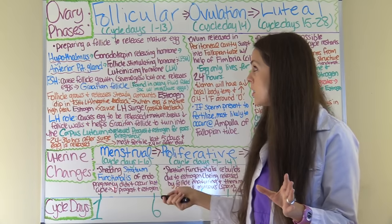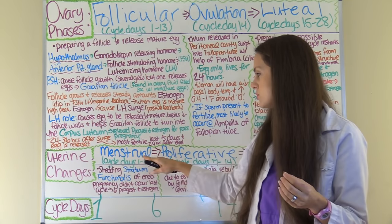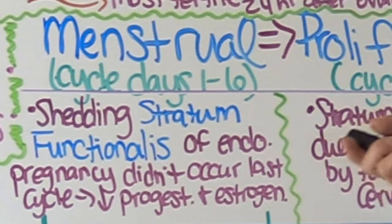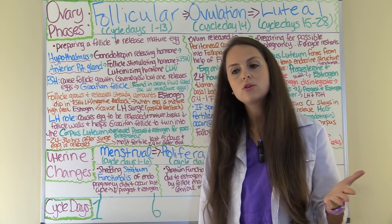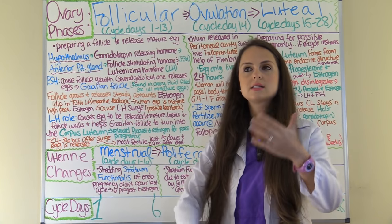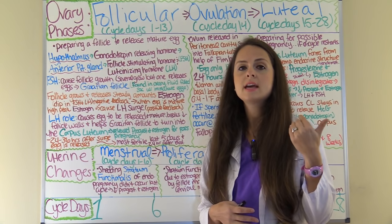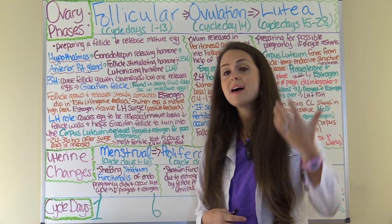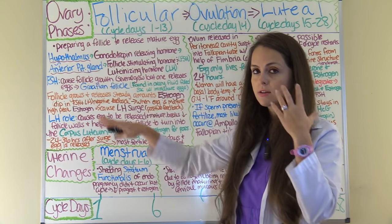Corresponding with the follicular phase, we have uterine changes. The first phase of the uterine cycle is the menstrual phase, cycle days 1 through 6. This is when the woman will have bleeding and is shedding a layer of the endometrium called the stratum functionalis. What has happened is that last cycle pregnancy did not occur, so progesterone and estrogen levels dropped, causing the hypothalamus to release gonadotropin-releasing hormone, restarting FSH and LH release.